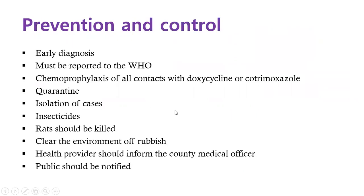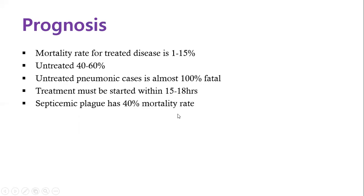For prevention: early diagnosis is critical because if discovered late, necrosis that has already occurred is irreversible. This is a disease that must be reported to the World Health Organization. Chemoprophylaxis is recommended for all people who have had contact. Quarantine and isolation are important preventive and control measures. Insecticides should be used to kill fleas, rats should be killed, and the environment should be kept clean to avoid attracting rats. Public health officers and the public should be notified.